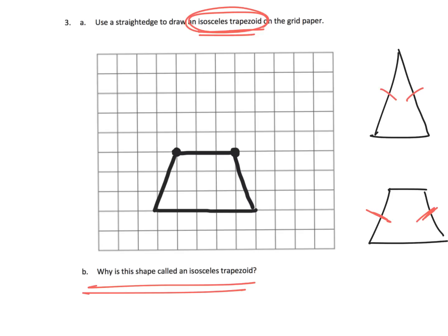There is the isosceles trapezoid. This side and this side are the exact same length. We know it's a trapezoid because it has four sides and at least one pair of parallel lines. Is this the only possible figure that could have been drawn? No way — but it's definitely one possible answer.